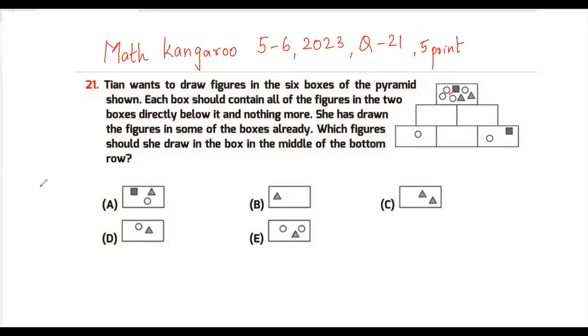Each box should contain all the figures in the two boxes directly below it and nothing more. She has drawn the figures in some of the boxes already. Which figure should she draw in the box in the middle of the bottom row? What should come in this box, the middle of the bottom row?